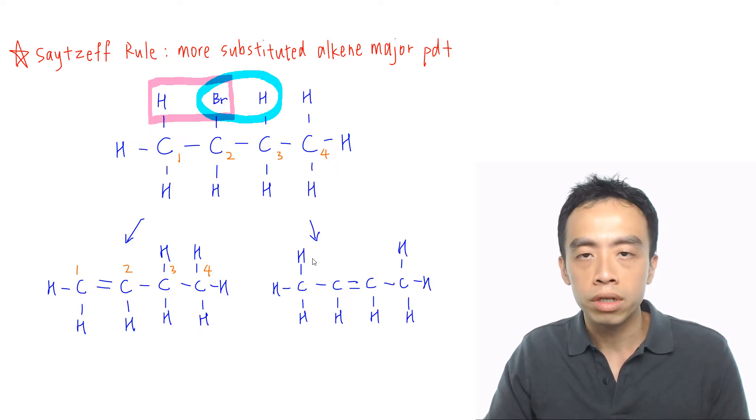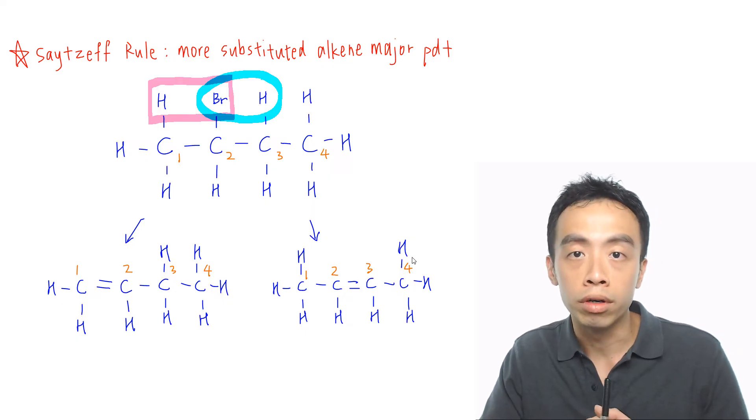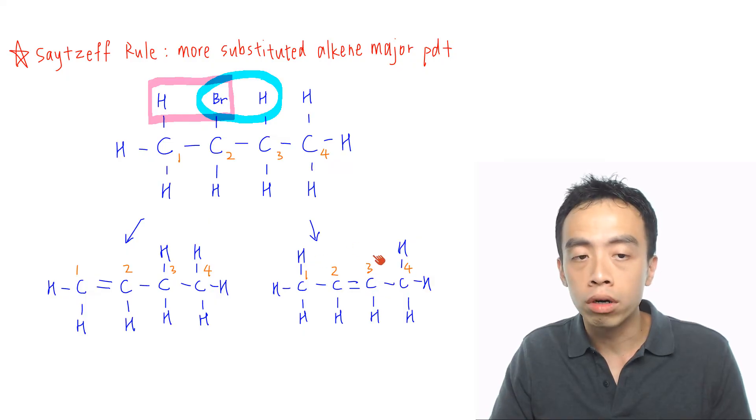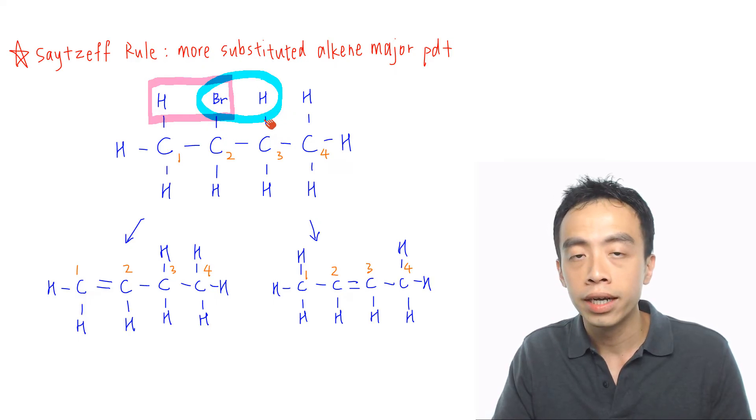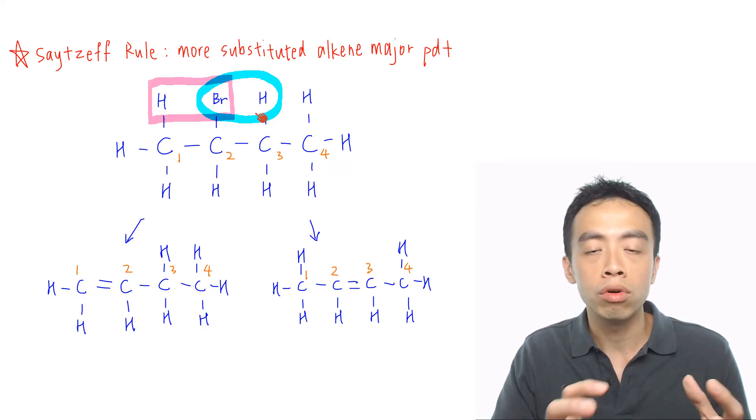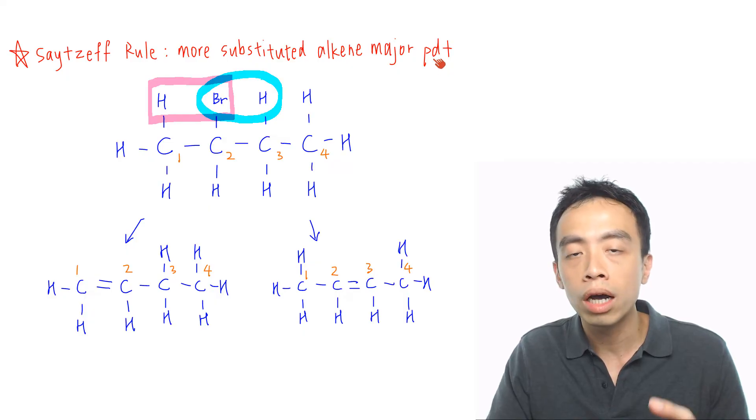Again if you number off, that makes it easier for us to compare the two. So this is my position one, this is my carbon number two, carbon number three, and carbon number four. So this will be the alkene that's being formed if I take away the hydrogen from position three. Now the next thing we want to do is we want to compare the two products. Now Saytzeff rule says that the more substituted alkene is my major product.